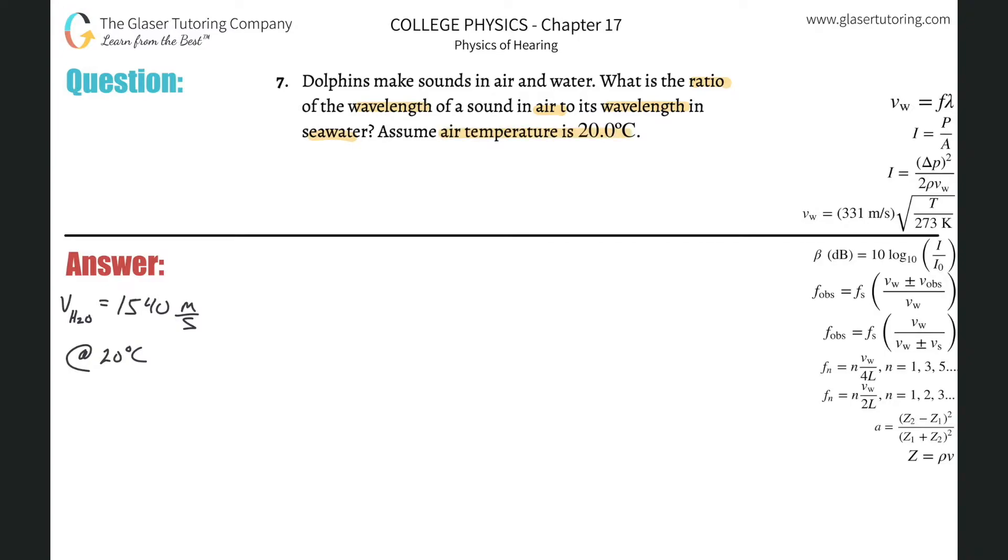Well, we also have to assume another temperature then for the water as well, and we'll assume then that the water temperature is also 20 degrees Celsius. If we make that assumption, we can look up the velocity of water, the velocity in seawater at 20 degrees Celsius is approximately 1540 meters per second. That's looked up in the table in your text.